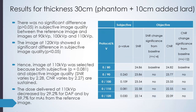For the third thickness at 30 centimeters — the phantom plus 10 centimeters of added lard — there was no significant difference between the reference image and images taken at 90, 100, and 110 KVP. The image at 120 KVP showed a significant difference in subjective image quality and was therefore excluded. The image at 110 KVP sustained both objective and subjective image quality, and the dose decreased by 29.2% for DAP and 59.7% for MAS from the reference image.